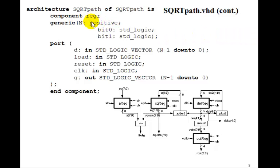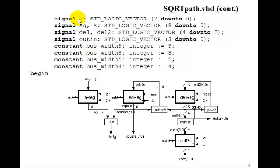So in the architecture, we have the component for our reg R that we developed. And then we have our signals that we need. Deload A, Sq 8 down to 0, as well as S 8 down to 0. We need del 4 down to 0, del 2, 4 down to 0. And then out in, 3 down to 0, that'll be 4 bits. And we'll define constants for our bus widths. Bus widths 9, 8, 5, and 4.